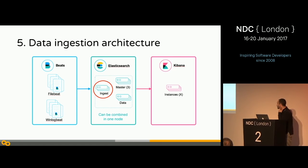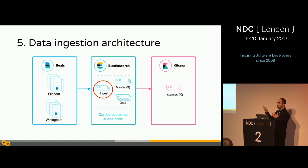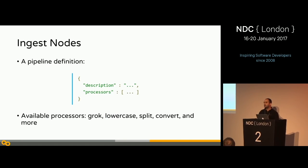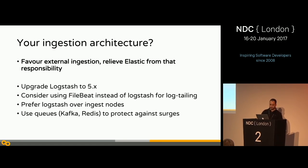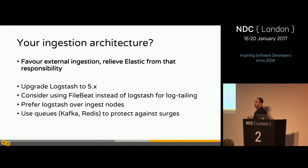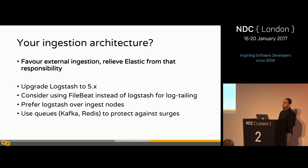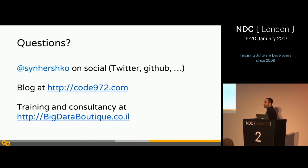Elasticsearch introduced ingest nodes, but I don't recommend using them — I prefer all ingest work done on dedicated nodes, which is what Logstash does, and Logstash 5 does it in a much better way with significant optimizations. My preference is to have data ingestion and parsing done externally to the cluster. I'll post these slides later. Thank you very much, and don't forget to protect your clusters. If you need any help, feel free to reach out.